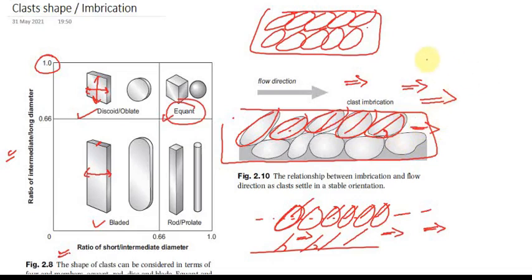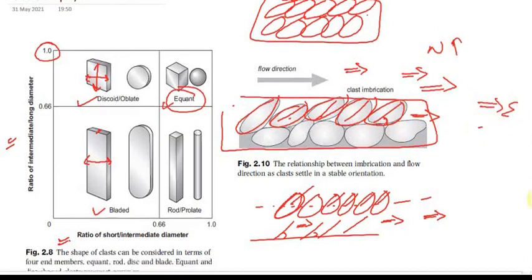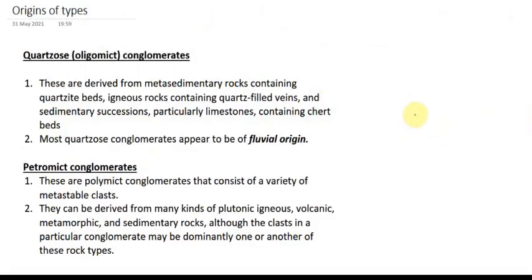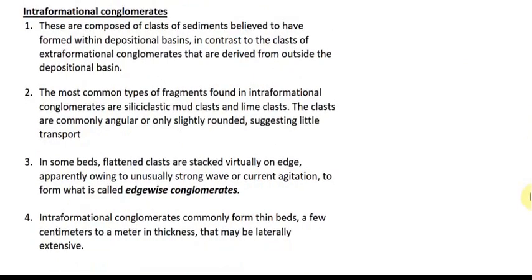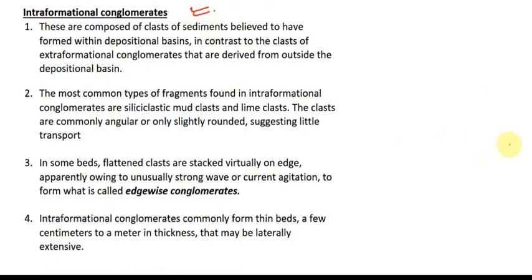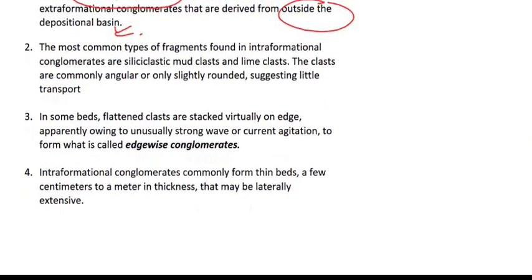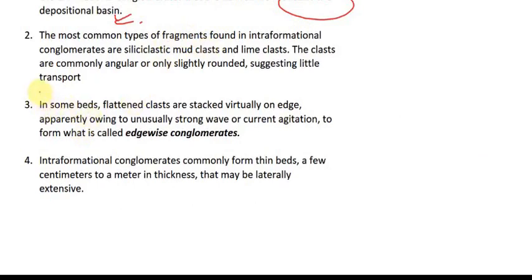If an exam asks for the flow direction, look at the acute angle of the imbricated clasts — for example, if the acute angle points east, that is the flow direction. Here we also see that quartzose or oligomict conglomerate is generally of fluvial origin. Petromict conglomerate contains different kinds of clast rocks. Intraformational conglomerate is derived within the depositional basin; extraformational is from outside the depositional basin. If clasts are stacked virtually on edge due to strong waves, that is edgewise conglomerate. Intraformational conglomerates commonly form thin beds of a few centimeters to a meter in thickness, and are laterally extensive.